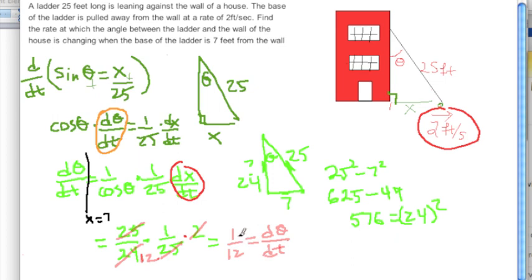This is 1/12 radian per second, or since radians are unitless, you would say this is 1/12 per second.